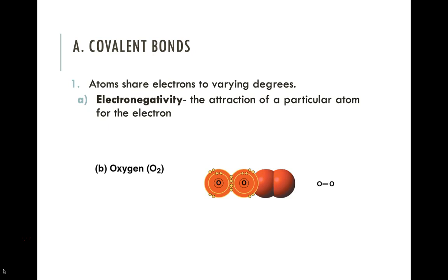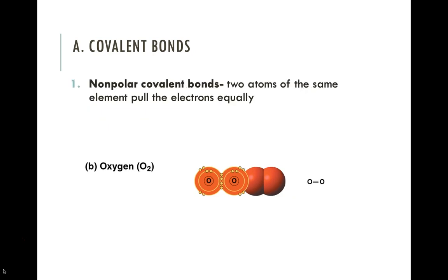Oxygen is very electronegative, and this is important because a lot of atoms share their electrons to varying degrees — some really like to share their electrons, others don't. Electronegativity is how strong the attraction is of an atom for an electron. Nitrogen and oxygen are very electronegative — they like to form bonds and attract other electrons to them, and if they don't have something to bond to, they'll bond to hydrogen. From electronegativity, we get two types of covalent bonds: nonpolar and polar covalent.